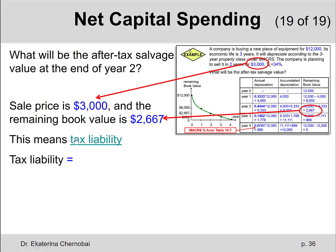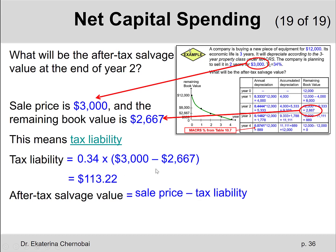The tax liability is calculated on the difference between the selling price and the actual book value: $3,000 minus $2,667, multiplied by the tax rate of 34%, giving a tax liability of $113.22. Subtracting this from the $3,000 selling price gives the after-tax salvage value of $2,886.78.